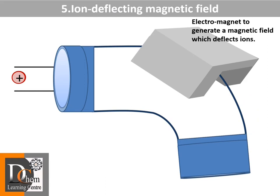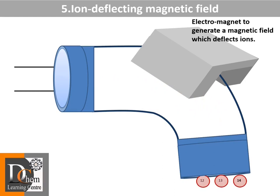The positive ions enter and are deflected by the magnetic field. The amount of deflection depends on the mass-to-charge ratio of the ions. Ions with a large mass-to-charge ratio are deflected less than ions with a small mass-to-charge ratio. If all ions carry the same charge, usually plus one, the extent of deflection is inversely proportional to their masses.